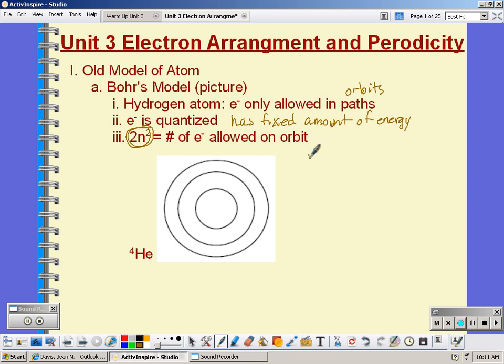So if we were on the first orbit or the first energy level, n would equal 1. Well, 1 squared is 1 times 2 is 2. So the first energy level can hold 2 electrons. Now if we go to the second energy level, 2 squared is 4 times 2 is 8. So the second energy level can hold a total of 8 electrons. On the third energy level, 3 squared is 9 times 2 is 18. It can hold 18 electrons and we can continue this.